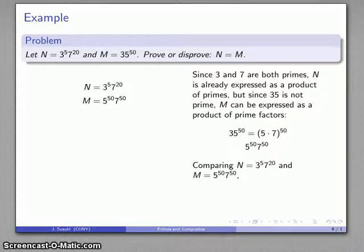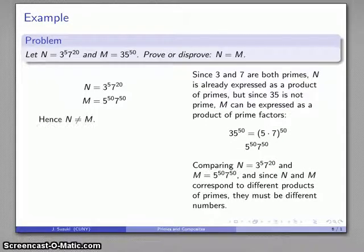The Fundamental Theorem of Arithmetic says that if I have a different product of primes, I must have a different number. Here I can see that my products of primes are different. I have 5 threes versus 50 fives, 20 sevens, 50 sevens. I have different primes, I have different numbers of primes, so the two numbers must be different numbers.